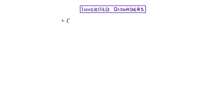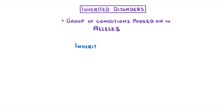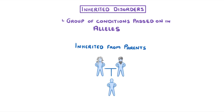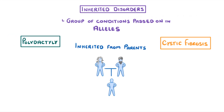In this video we're going to take a look at inherited disorders, which are basically a group of conditions that can be passed on in certain alleles and so can be inherited from a person's parents. The two examples we'll consider are polydactyly and cystic fibrosis.